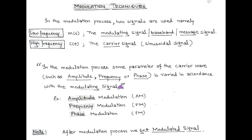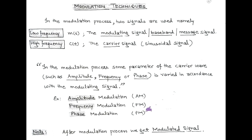In the modulation process, some parameter of the carrier wave — such as amplitude, frequency, or phase — is changed in accordance with the message signal. This is the definition of modulation: the parameter amplitude, frequency, or phase of the carrier signal is changed according to the message signal. For example, when the amplitude is changed, it is called amplitude modulation, denoted by AM. In case of frequency modulation, the frequency of the carrier is changed according to the message signal — that is FM. And in case of phase modulation, the phase of the carrier is changed according to the message signal — called PM.